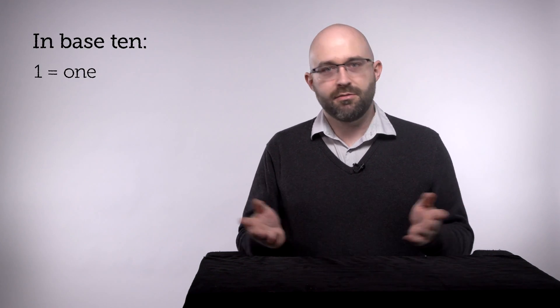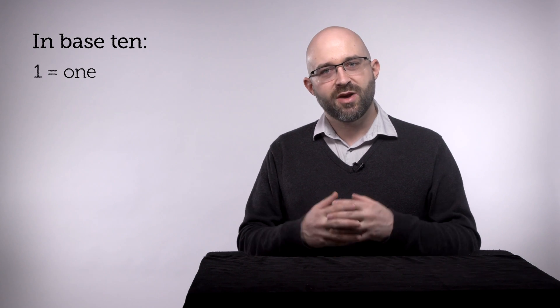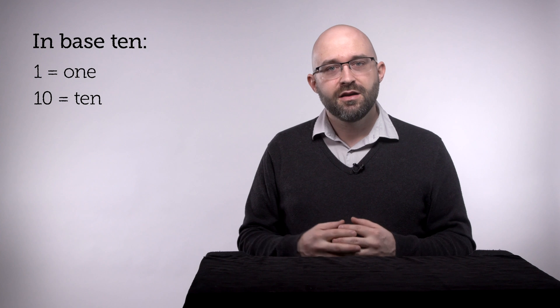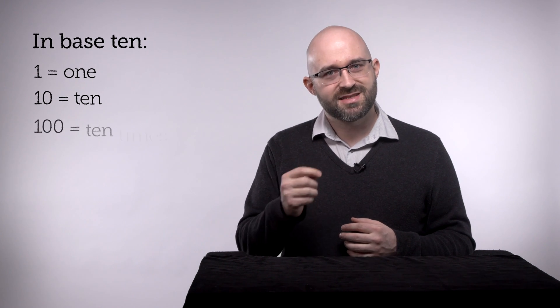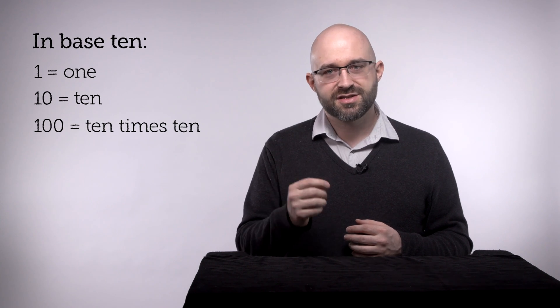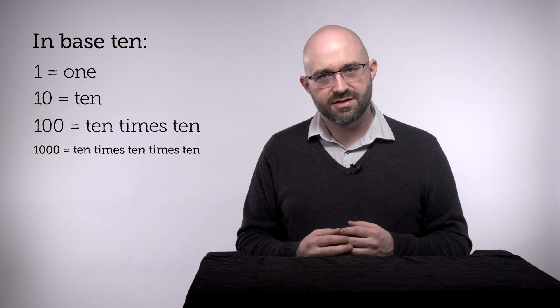The number system you're used to is base 10, or decimal. In base 10 or decimal, when you write a 1, it just means a 1. When you write a 1-0, that means 10. That's why it's base 10. When you write 1-0-0, that means 10 times 10, or 100. When you write 1-0-0-0, it means 10 times 10 times 10, or 1000. Now what happens if we take all these tens and turn them into twos? That's how you get binary.